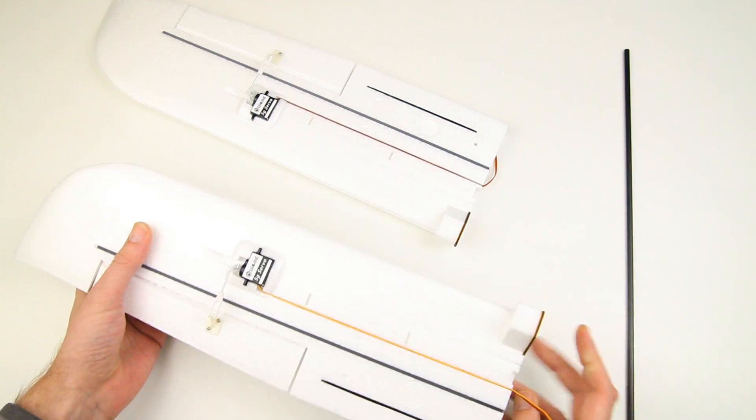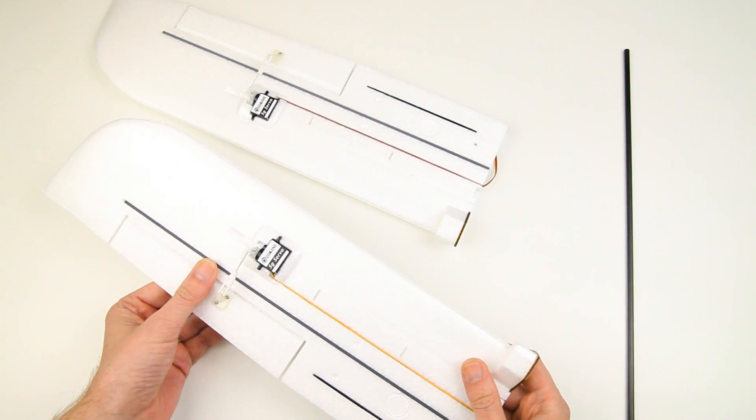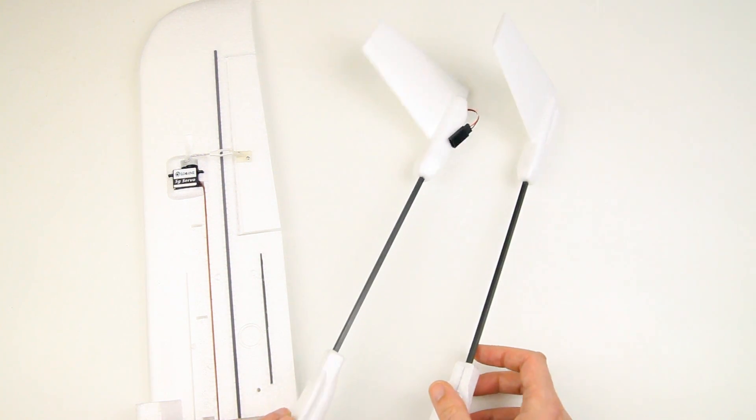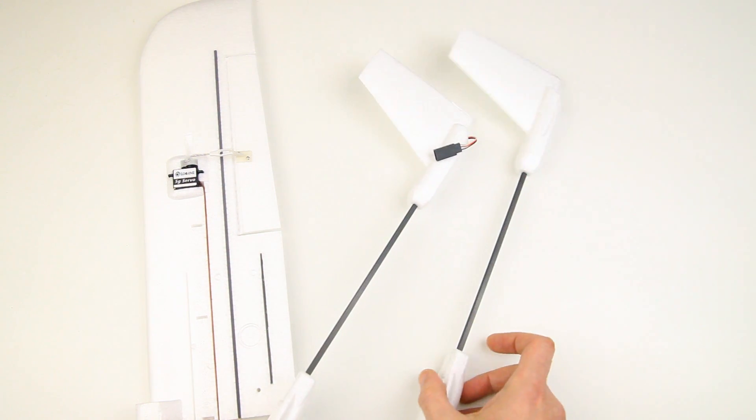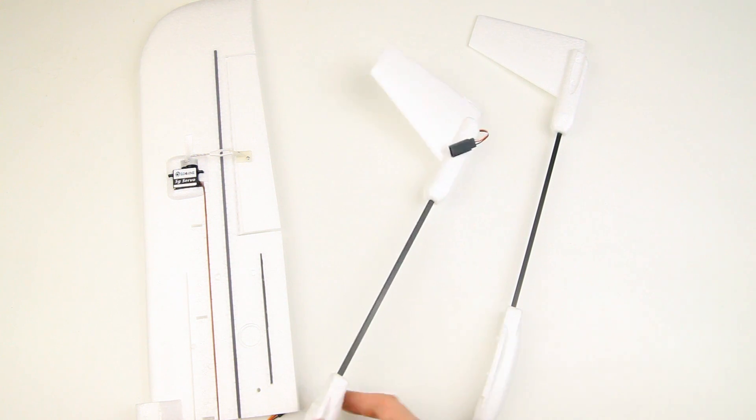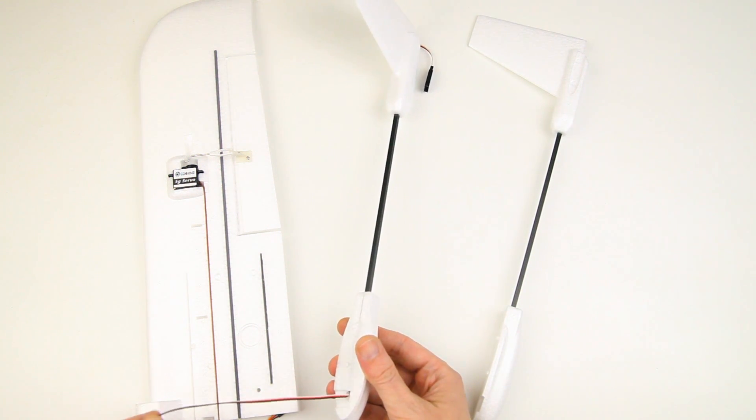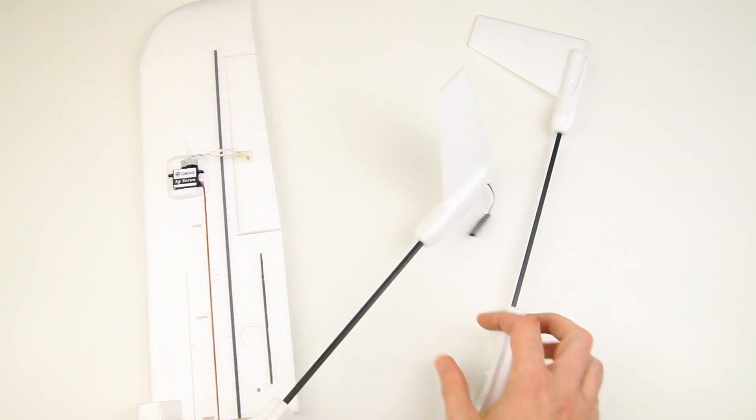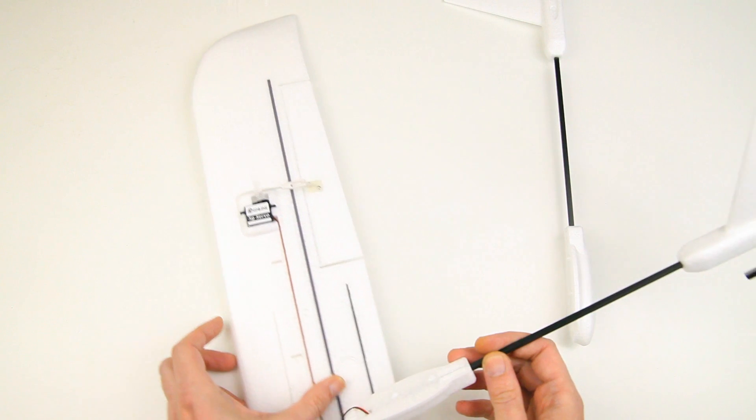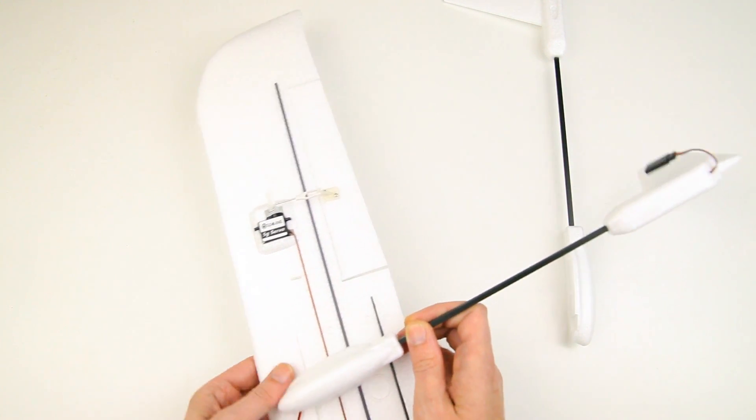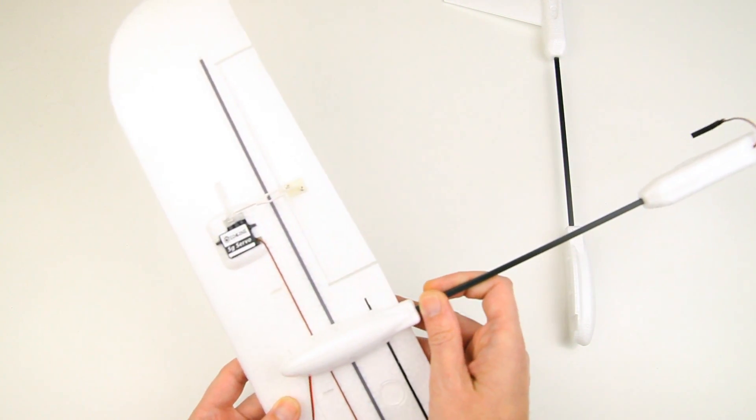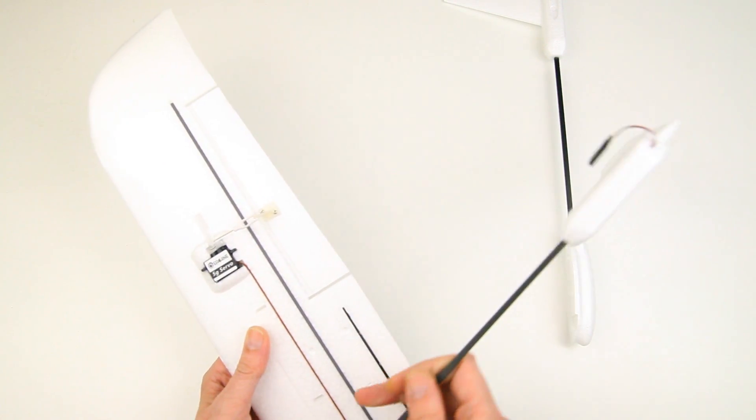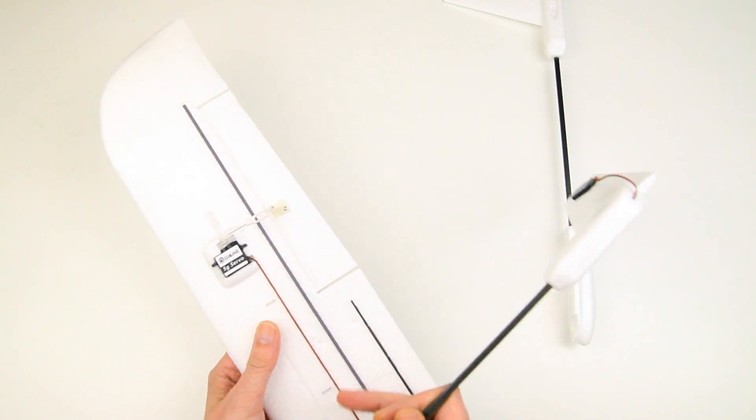Then we have these two tail sections with the vertical stabilizers. One of them has a servo extension running through it, which is of course for the elevator. And these actually glue onto the wings over here.